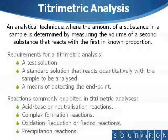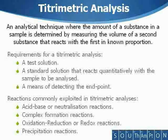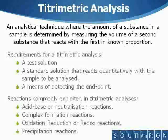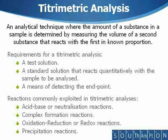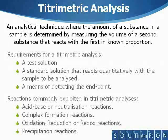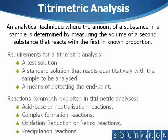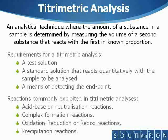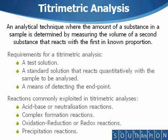In a titrometric analysis, the amount of a reagent — that is the titrant — required to complete a chemical reaction with a solution containing the sample — that is the analyte — is determined. To perform a titrometric analysis, a test solution containing an unknown concentration of the analyte is needed. Also required is a standard solution of known concentration that reacts quantitatively with the analyte. Note that the stoichiometry of the reaction between the titrant and the analyte must also be known.